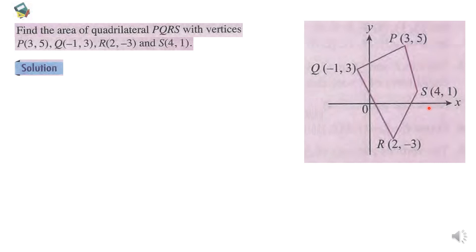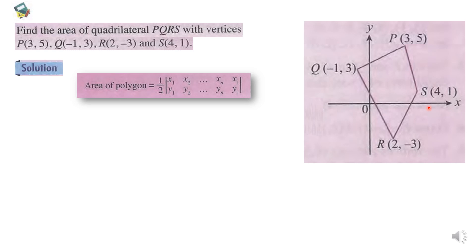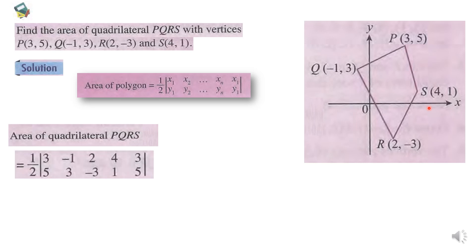In order to solve this question, we need the formula for the area of a polygon. The area of quadrilateral PQRS can be written by substituting the coordinates of PQRS into the formula respectively.